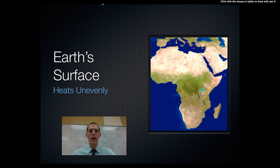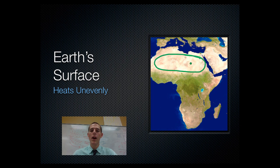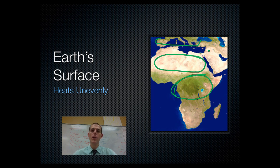Looking at a picture of the continent of Africa — based on where you are, things heat up differently. Right here is all the Sahara Desert, so that's going to be super hot and dry. Right here is the Congo Rainforest — super hot and wet. Up here in Europe, it's going to be a lot cooler. Different parts of the earth heat up differently: at the equator it heats up a lot more; towards the poles it's cooler. Different parts of the earth get the same amount of sun, but they heat up differently.